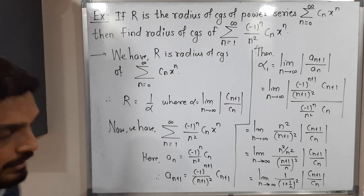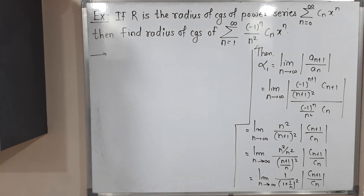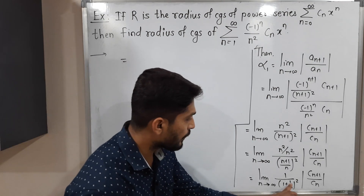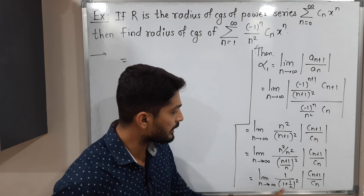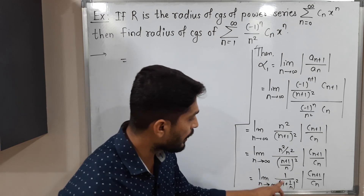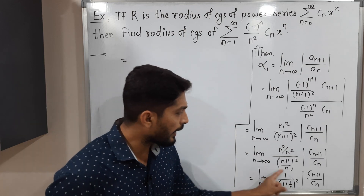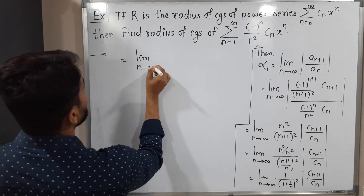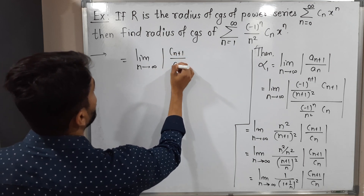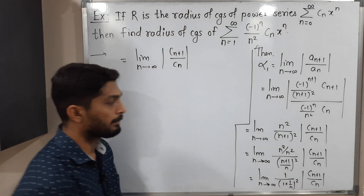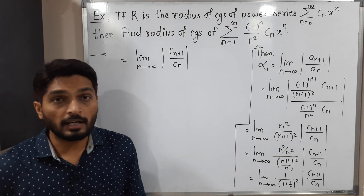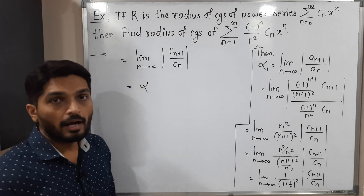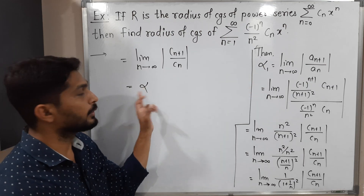Applying the limit: 1/n tends to 0, so (1 + 1/n)² tends to 1. Therefore that term equals 1, and we are left with limit as n tends to infinity of |cₙ₊₁ / cₙ|, which is nothing but α. So α₁ = α.